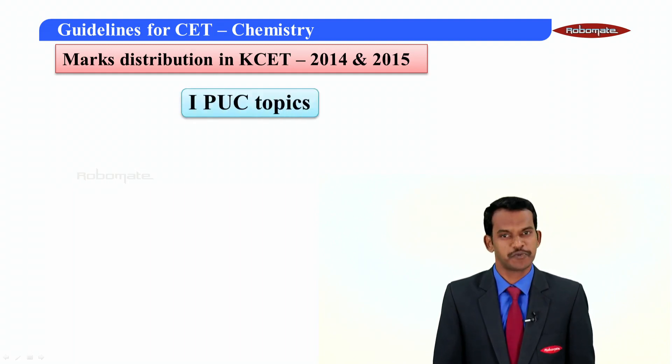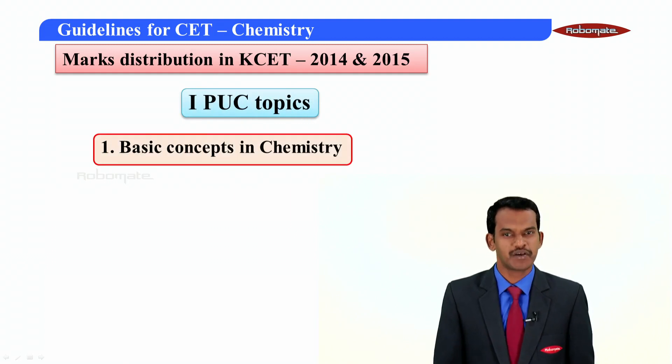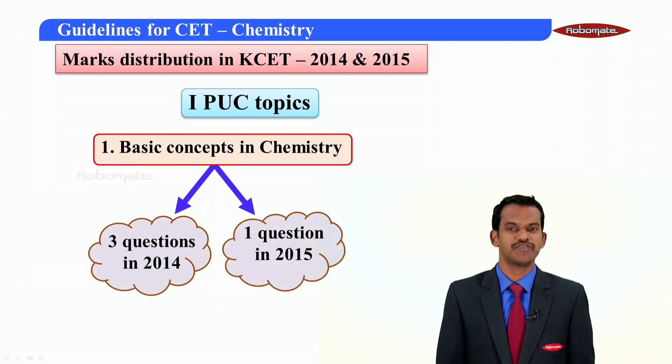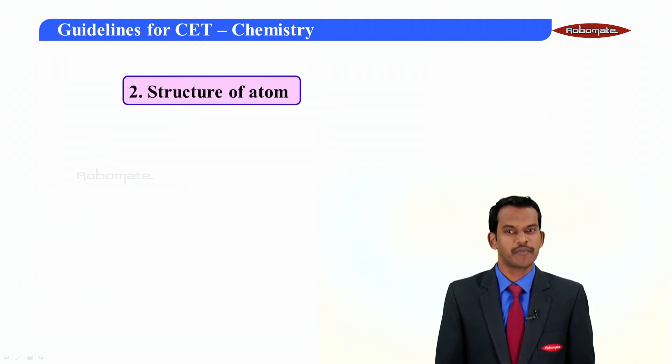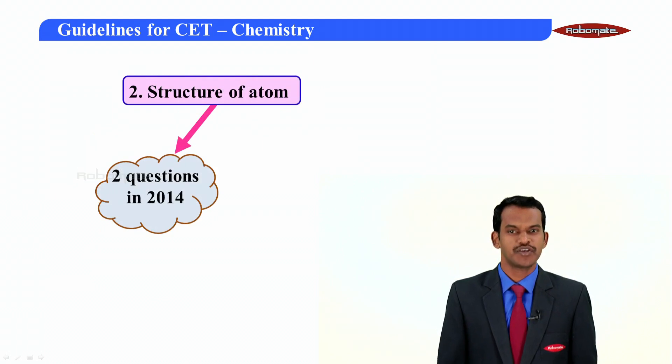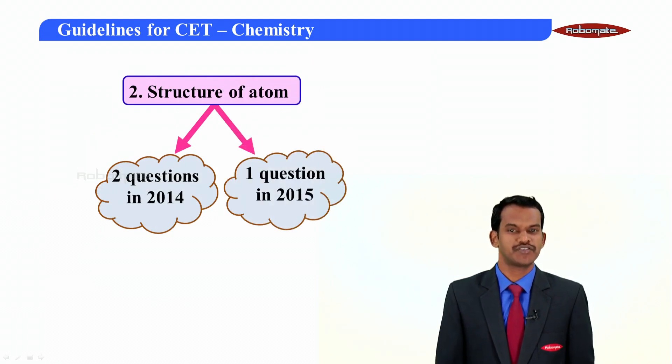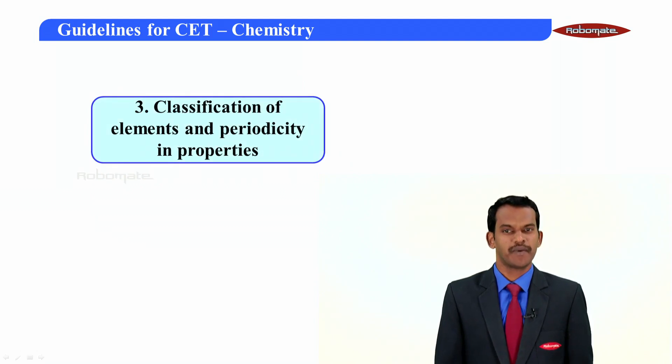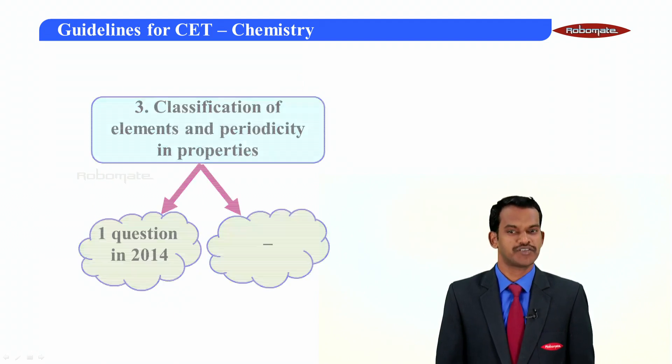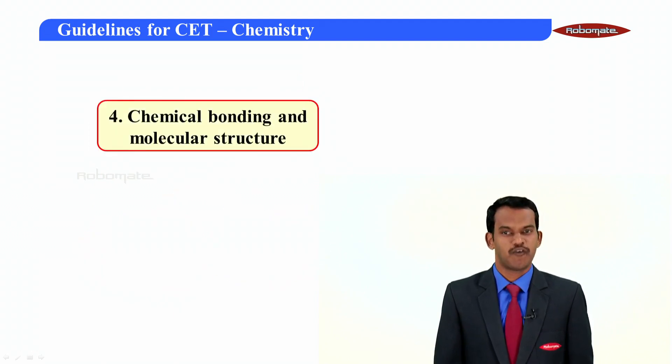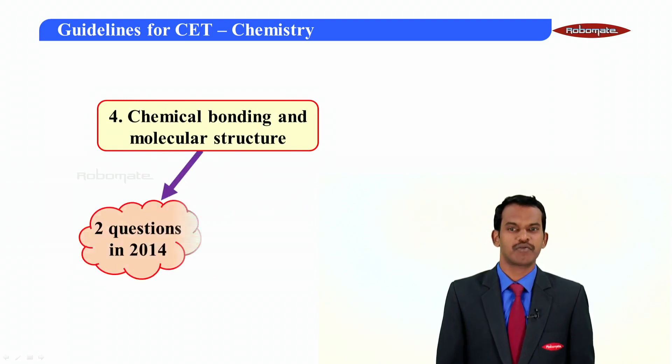Coming to the first PUC topics: Topic number one, basic concepts of chemistry - in 2014 there are three questions asked and 2015 only one question. The second topic, structure of atom - in 2014 two questions and in 2015 only one question. The third topic, classification of elements and periodicity in properties - one question in 2014 and no question asked in 2015. The fourth one, chemical bonding and molecular structure - two questions asked in 2014 and again two questions in 2015.